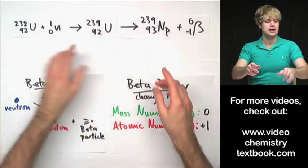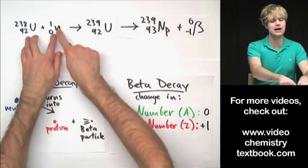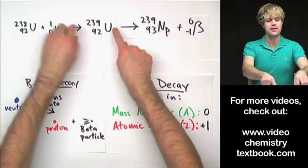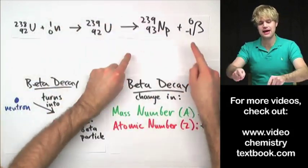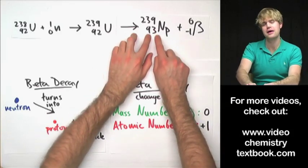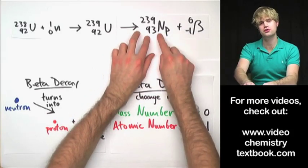So the point here is that all we had to do was add a neutron, and then because it made the uranium unstable, it then decayed by doing beta decay.